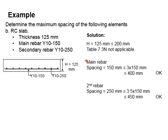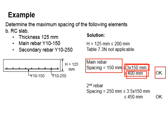The main reinforcement bar spacing is 150 mm. Check this against 3 times the slab height and 400 mm. Since 150 mm is less than 3(125) = 375 mm and less than 400 mm, the spacing is acceptable.